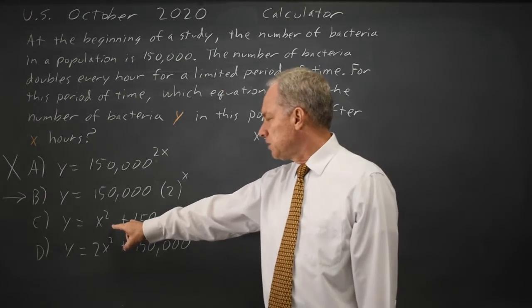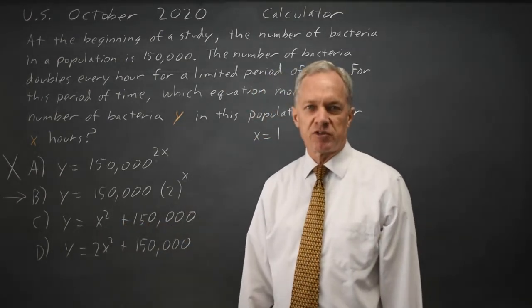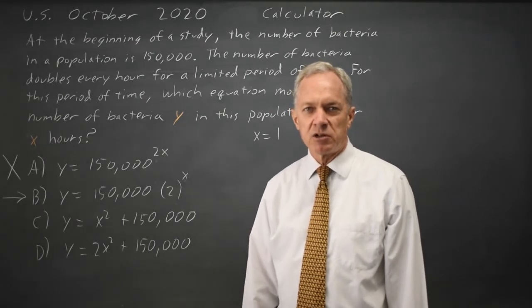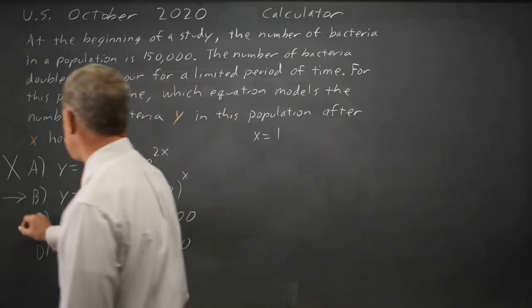In choice C, 1 squared is 1 plus 150,000 is 150,001. I've only increased my number of bacteria by 1. I haven't doubled, so choice C is not correct.